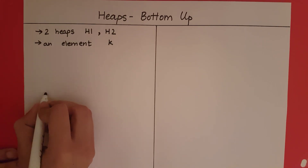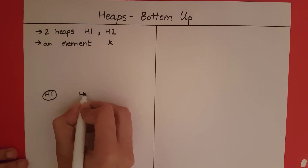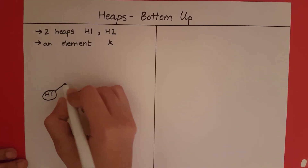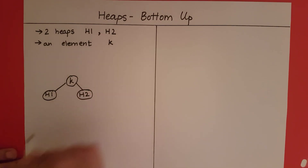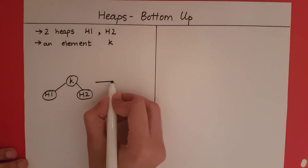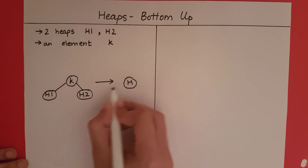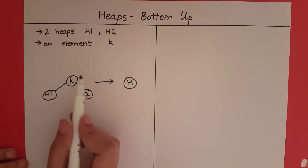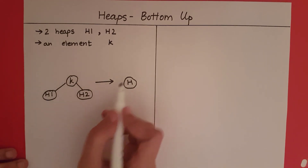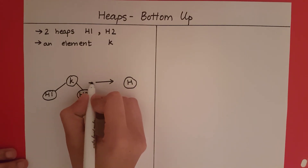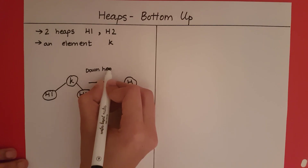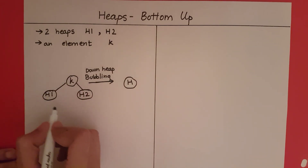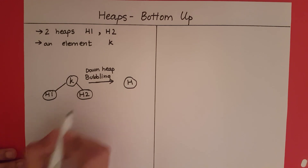We do this by connecting the two heaps with k as the root. Suppose we have heap 1 and heap 2 — this is the root of heap 1 and this is the root of heap 2. We connect these two heaps with k as the root. After doing this, we need to convert it into a valid heap h, meaning the tree must satisfy the heap property. We perform downheap bubbling, which rearranges the elements of h1, k, and h2 such that the heap property is satisfied.